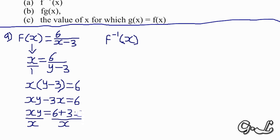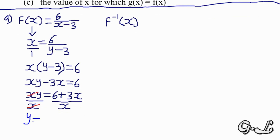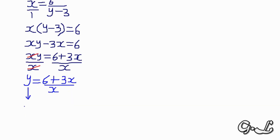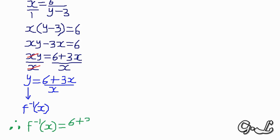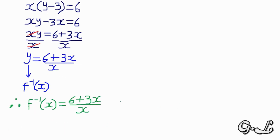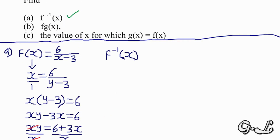We divide both sides by x, so y = (6 + 3x)/x. Replacing y with f inverse of x, we get: therefore, f inverse of x = (6 + 3x)/x. That is how you earn marks in an exam. We are done with part a.